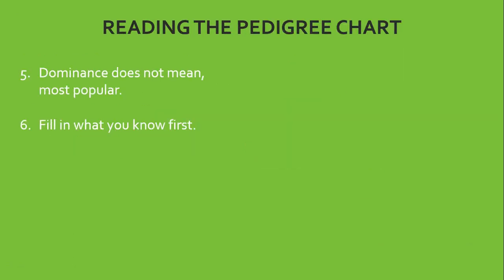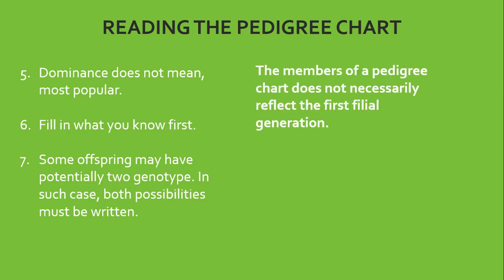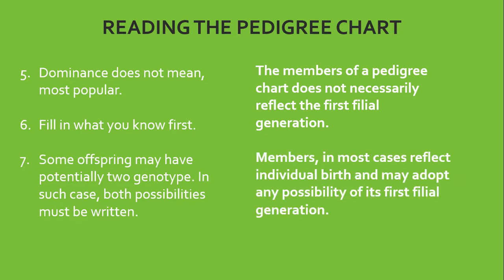When we are working the pedigree chart, dominance does not mean most popular. You are supposed to fill in what you know first. Some offspring may have potentially two genotypes. In such case, all possibilities must be written. The member of a pedigree chart does not necessarily reflect the first filial generation. Members, in most cases, reflect individual birth and may adopt any possibility of its first filial generation.